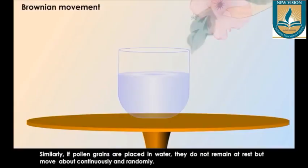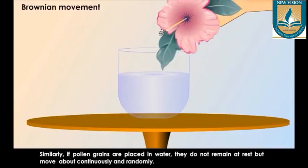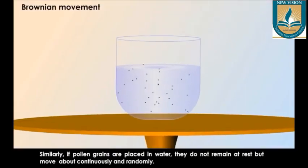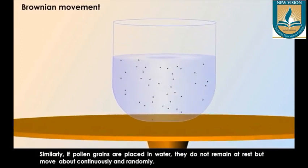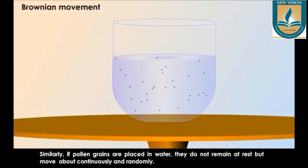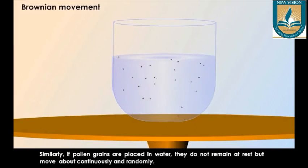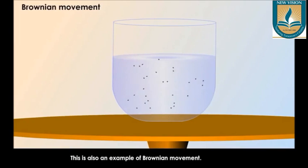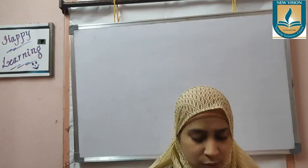Similarly, if you put some pollen grains in water, they do not remain at rest, but they move about continuously and randomly. The similar movement occurs in the cytoplasm of protozoans also, and this is an example of Brownian movement.